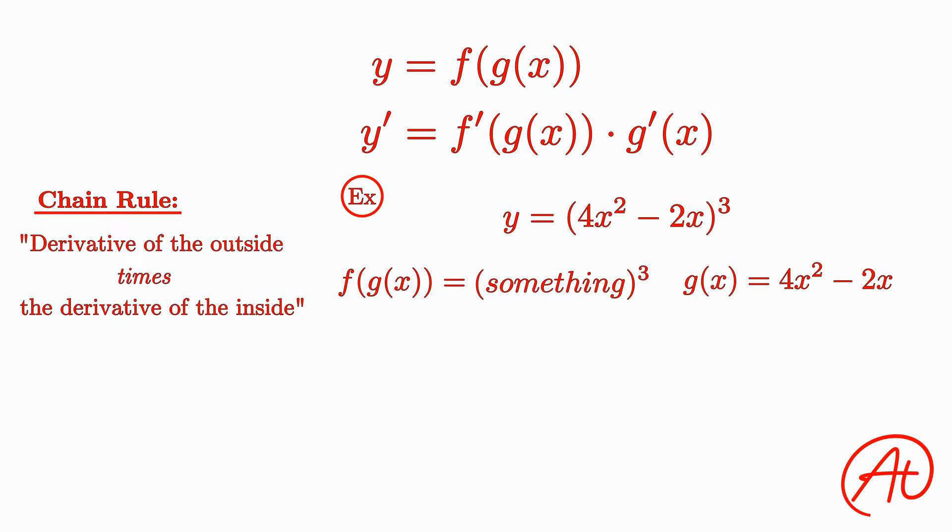Okay, derivative time. For the outer function, if we have anything cubed, the power rule tells us that the derivative is always 3 times that thing squared. Replacing what that inside thing was, we get that the derivative of the outside is 3 times (4x squared minus 2x) squared. Then taking the derivative of the inside function, again using the power rule, we get 8x minus 2.